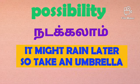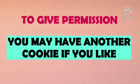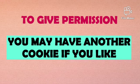Next, May and Might are used for giving permissions. For example: 'You may have another cookie if you like.' That is for giving permissions.